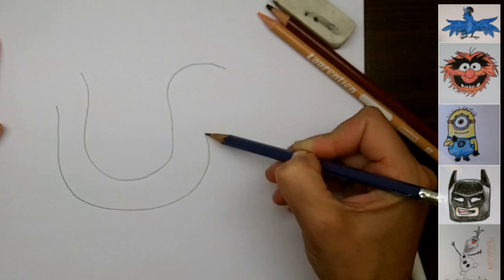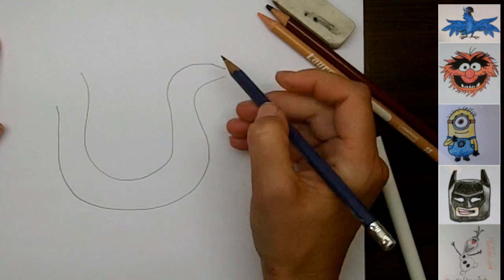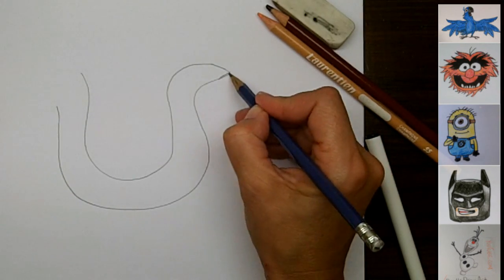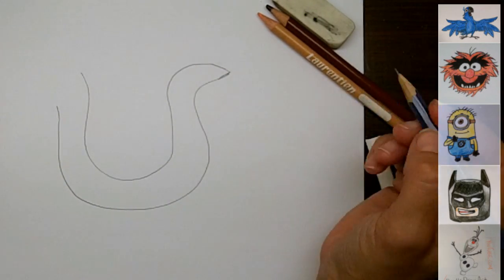So here I'm just drawing the shape of my worm. He is a very cute worm. He's got his tail lifted up in the air.